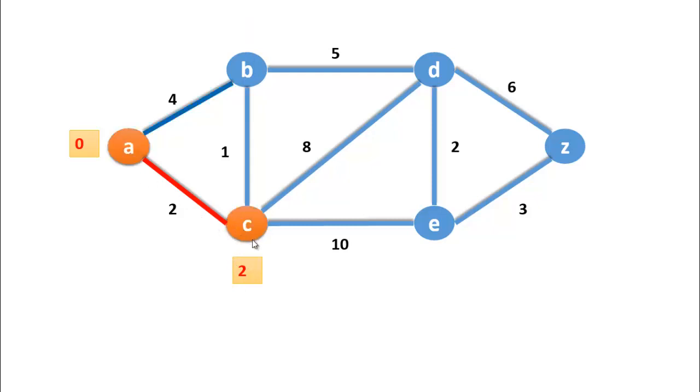Now from C, we will see that we can move C to B, C to D, and C to E. If we move C to B, our cost will be 2 plus 1, that is 3. 2 plus 8 is 10, and 2 plus 10, that is 12. Now 3 is the lowest, that's why we will select B.